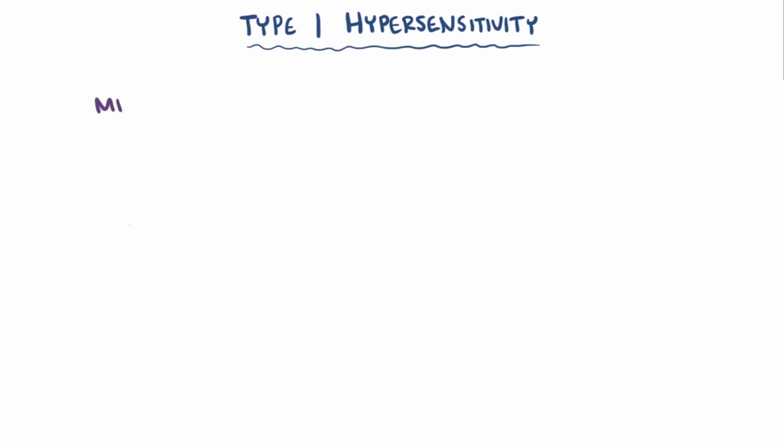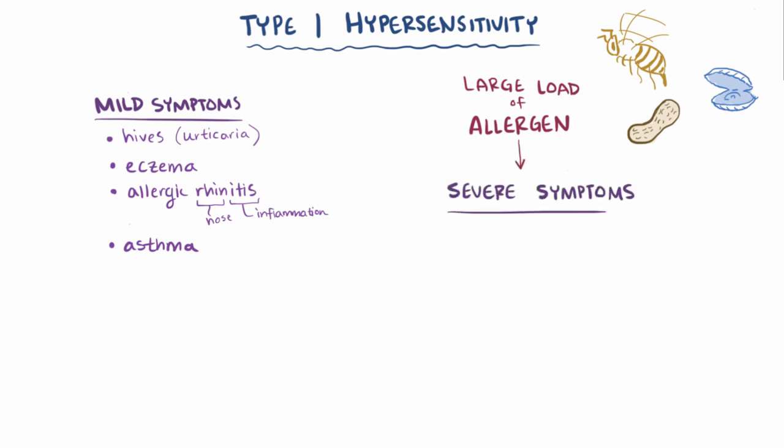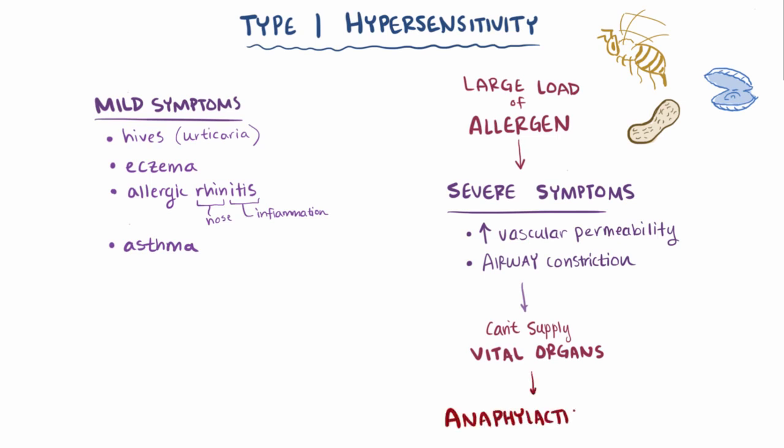A lot of people with allergic reactions experience mild symptoms, like hives, eczema, allergic rhinitis which is inflammation of the nose, as well as asthma. Certain people though, when exposed to a large load of specific allergens, like with bee stings, seafood, or peanuts, can have a really severe and potentially life-threatening allergic reaction. The increased vascular permeability, along with the constriction of airways, can be severe enough such that the body can't supply the vital organs, like the brain, with enough oxygen-rich blood, a condition known as anaphylactic shock.